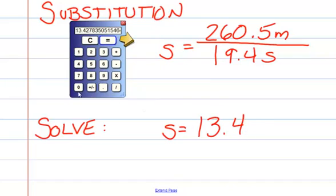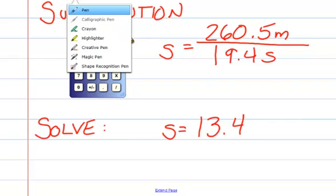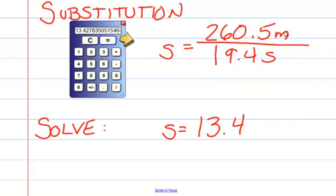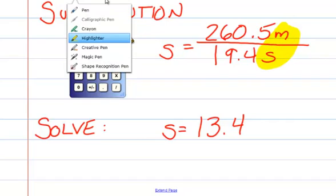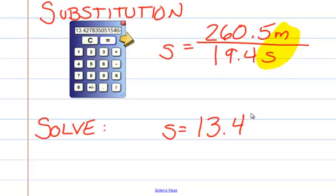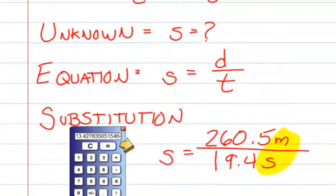So 260.5 divided by 19.4 equals 13.4. And we'll just round to the nearest tenth. Now what units should we select for our final answer? Well if you notice what units we had over here, we had meters over seconds. And that's going to be our units right there. We just take the same units, meters per second. And that gets us to the correct answer using the guess method.